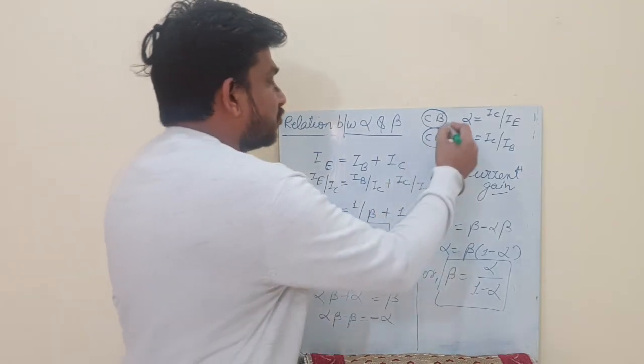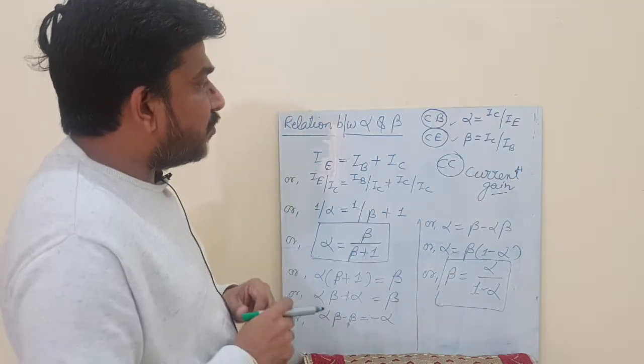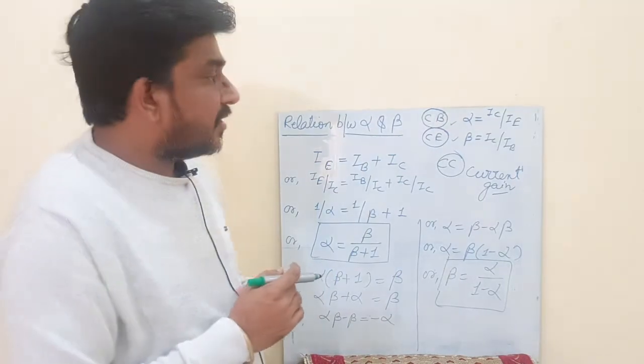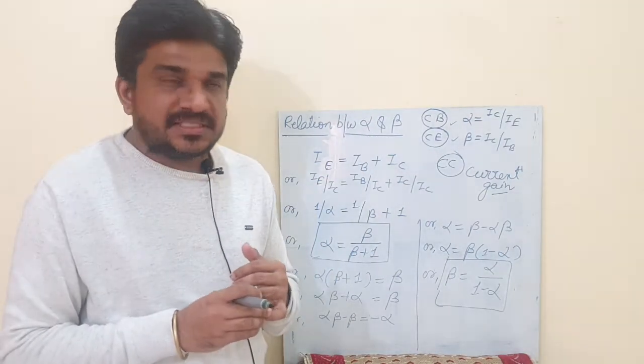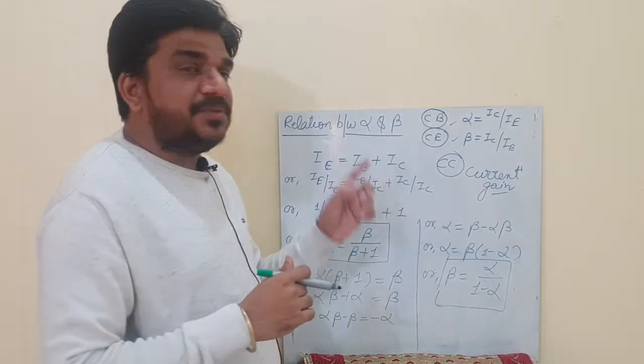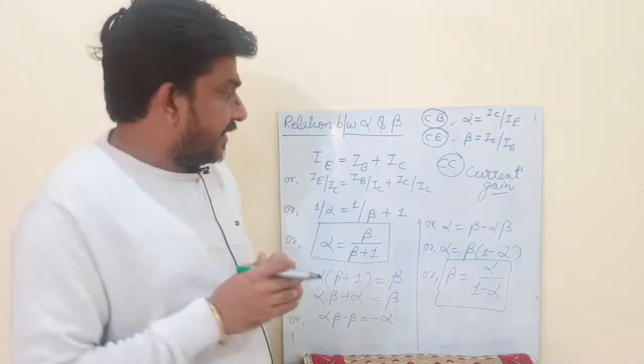Now we are supposed to set up a relation between alpha and beta. One more thing I want to tell you: these alpha and beta are the DC current gain. Transistors can operate on DC as well as AC. Here these alpha and beta, which are current gains in CB and CE configurations respectively, belong to DC current gain.